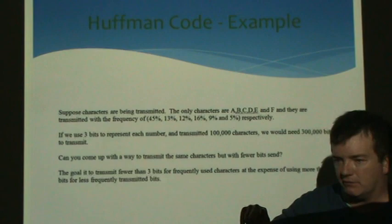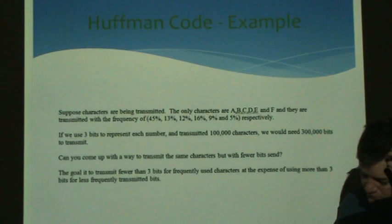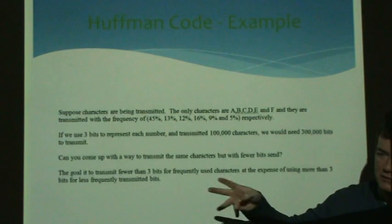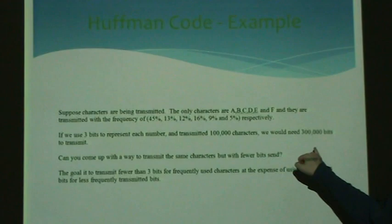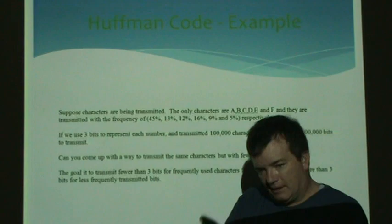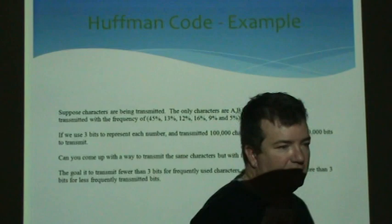With three bits we can represent eight unique letters, but we're only using six, so two combinations never get used. The receiver of our 100,000-character file receives 300,000 bits, reads them three at a time, and decodes the message. What we'd like to figure out is: could we send fewer bits but still get the message across?